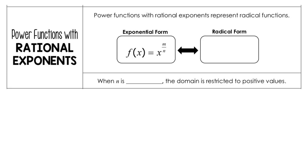Now we're going to discuss power functions with rational exponents. Remember, rational is just another way of saying fraction. So a couple of things to remember – we have our exponential form, and notice that the numerator is always your exponent and your denominator is always the root. I always try to remember that the bottom is where roots always grow. If you rewrite this in radical form, you're going to have the nth root of x raised to the m power.